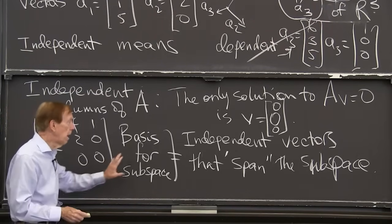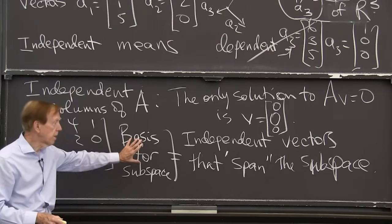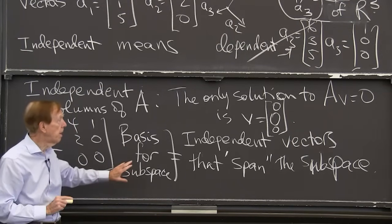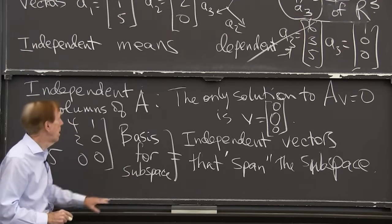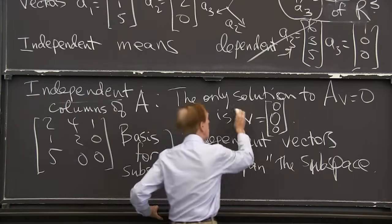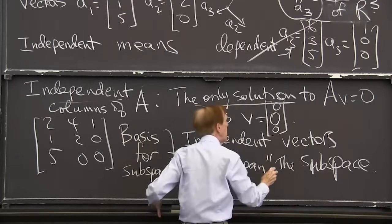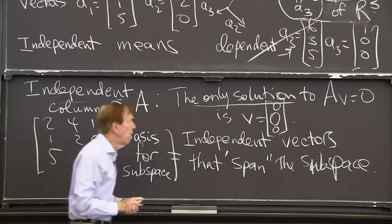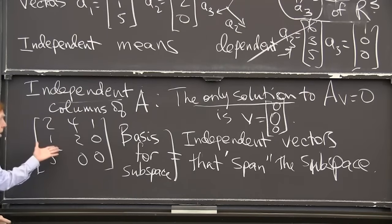So let me look at that and then come to dimension. So independent means that no other combination of the vectors, no combination of these vectors gives the 0 vector,